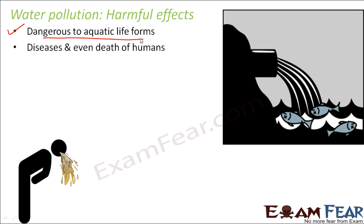Polluted water also causes diseases and even death in human beings. We use water for drinking, cleaning ourselves, and cooking — basically whatever we eat and drink contains water. So if the water itself contains poisonous substances, it can cause diseases in human beings. There are several diseases which are waterborne, for example cholera and typhoid. These kinds of diseases can happen in human beings and can even lead to death in extreme conditions.